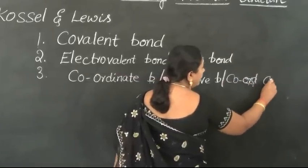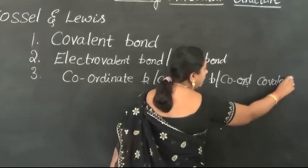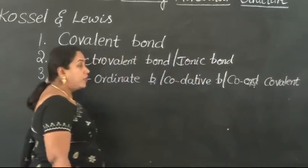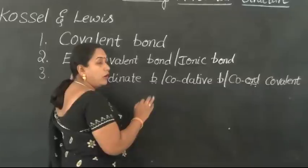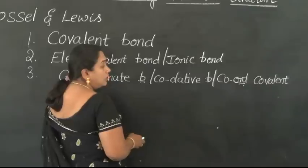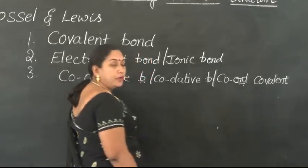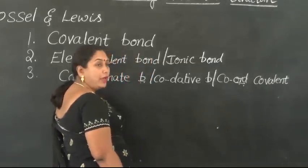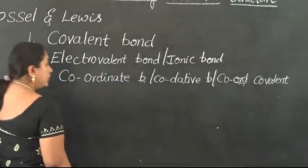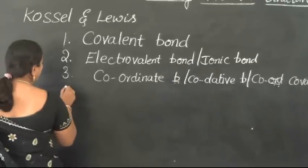Why should they be called coordinate covalent? Because once this bond is formed, we would not be in a position to recognize whether the constituent elements of that compound are bonded by a coordinate bond or a covalent bond. Therefore, it is also called by the name coordinate covalent bond.